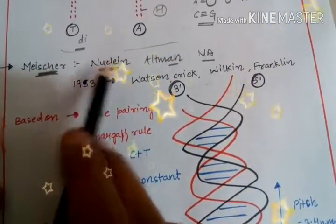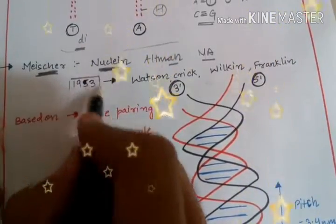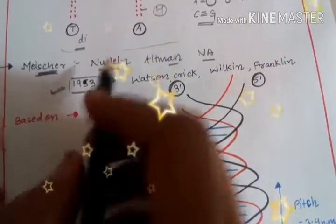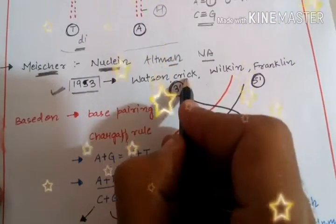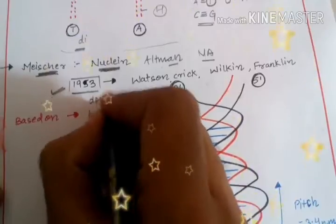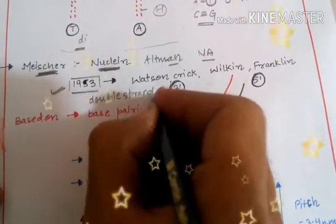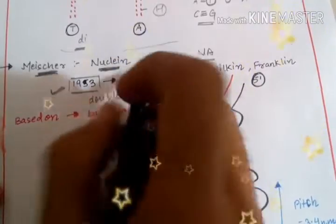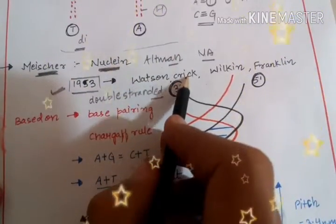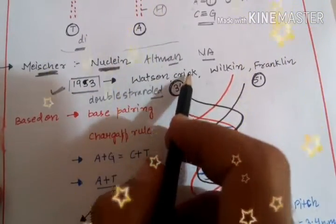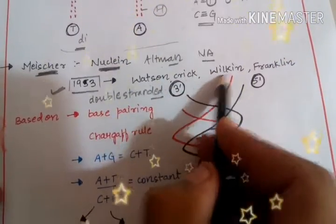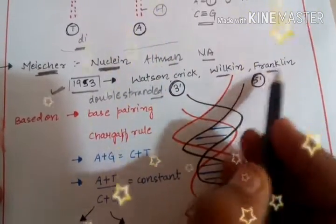In 1953, that's a very important date, Watson and Crick proposed the double stranded DNA model. Watson and Crick worked on the X-ray diffraction patterns that were studied by Wilkins and Franklin.